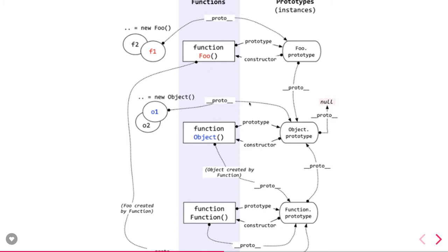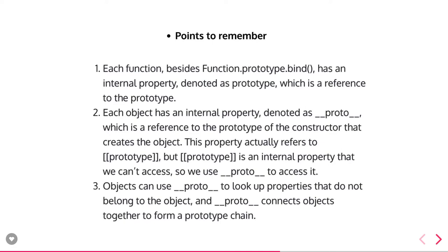A simple function's prototype is actually pointing to the Object proto. The function prototype's __proto__ is pointing to the Object proto, and Object proto is linked to null. This is one of the important things in JavaScript to understand — the general functions, the Object function, and the Function. Points to remember: each function (except Function.prototype.bind) has an internal property called 'prototype' which is a reference to its prototype object.